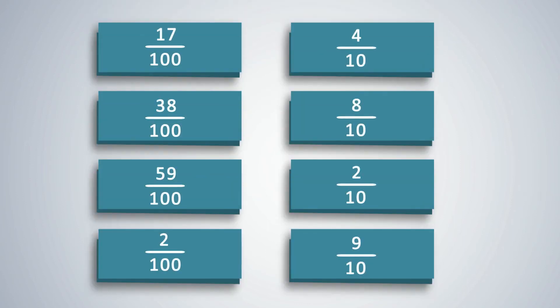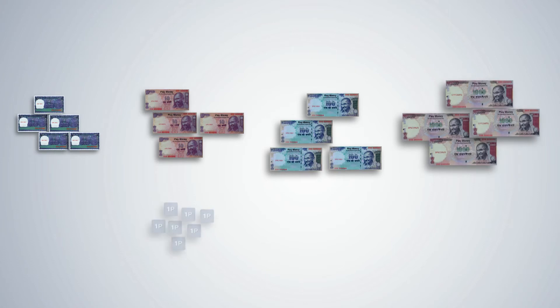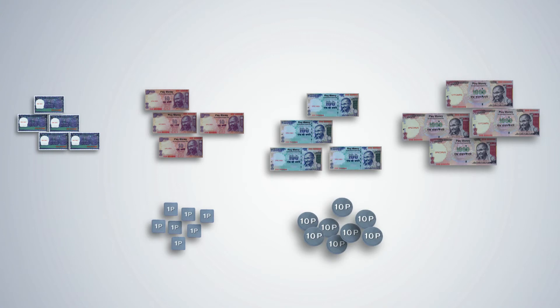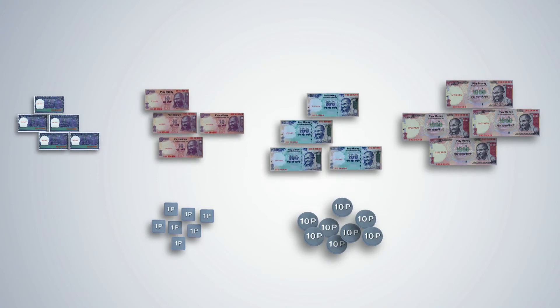Give some fractions and ask students to represent them using the decimal set. Let students now understand the link between decimal fractions and place value, since both are based on the power of 10. The math kit has currency notes in denominations of 1, 10, 100, and 1000 rupees, as well as 10 paise and 1 paise coins.